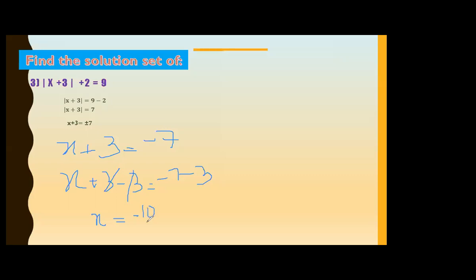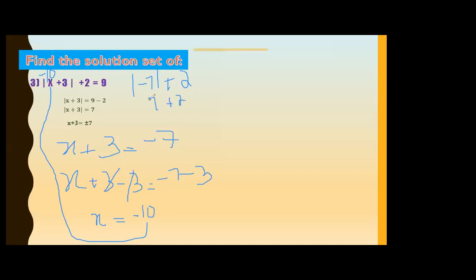We can verify: substituting x equals minus 10 gives minus 10 plus 3 equals minus 7. Mod(minus 7) equals 7. Then 7 plus 2 equals 9, which is our right-hand side. Correct.